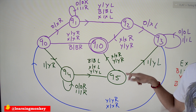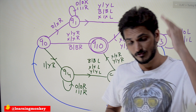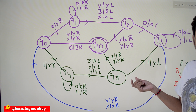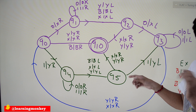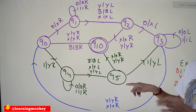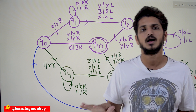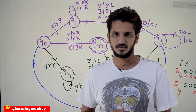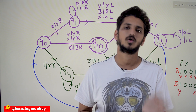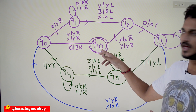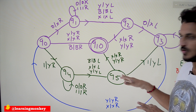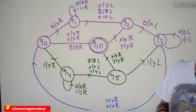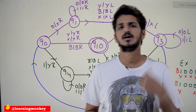There is no transition on this state for that input — just as in finite automata, whenever there is no transition on a state, the Turing machine stops and rejects the given input string. This is how we say accepted and not accepted: if you end up in q10, it accepts; otherwise, the Turing machine stops without having a matching transition, and the string is rejected.